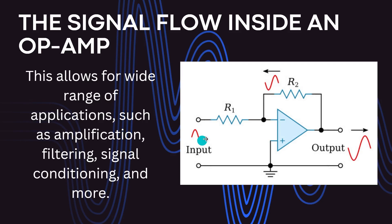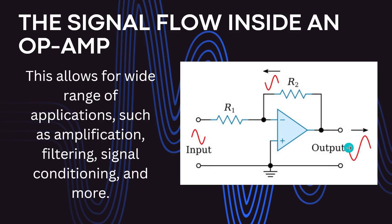Here we have an input signal — an alternating signal that we need to amplify. We have a feedback resistor, which we will discuss later. The input signal goes to the inputs of the operational amplifier, and the op amp takes the difference between the two inputs and amplifies it. As a result, the output signal comes out inverted: the signal starts from zero, rises, and then decreases.